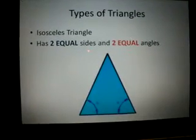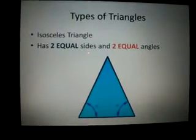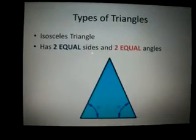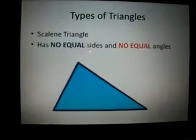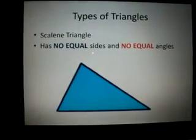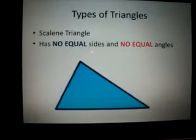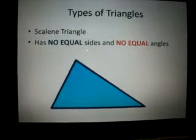Another type is known as an isosceles triangle. It has two equal sides and two equal angles. Another type is known as a scalene triangle. This triangle has no equal sides and no equal angles.